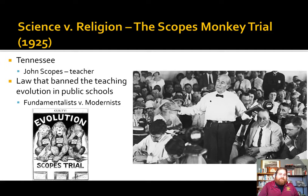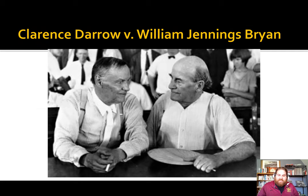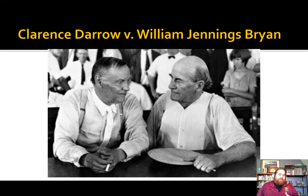In 1925, the ultimate showdown between science and religion happens with the Scopes Monkey Trial. In Tennessee, John Scopes, a teacher, was arrested for teaching evolution in public school, violating a law. They put him on trial and it was national news — science versus religion. Two of the most famous attorneys in the country, Clarence Darrow and William Jennings Bryan, were the two lawyers, and it became a huge pop culture sensation allowing people on either side to debate for months.